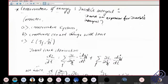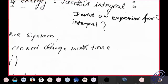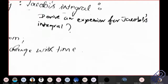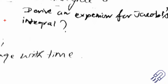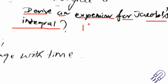Derive an expression for the Jacobi integral. The general form is h equal to summation of p_j times q_j dot minus L. It depends on what type of question is being asked, but in general you have to compute this summation of p_j q_j dot minus L. This is something which you have to derive and which you are going to see now.